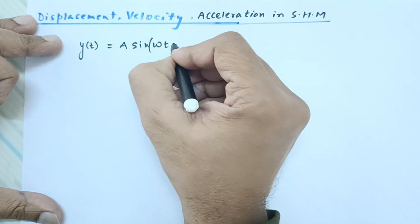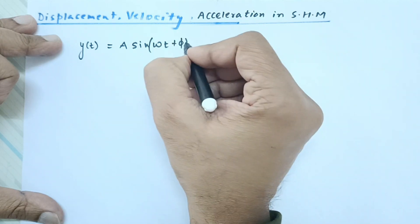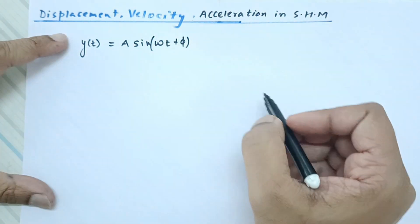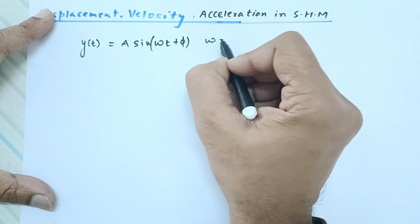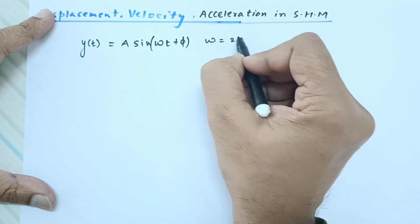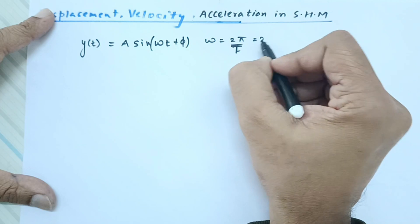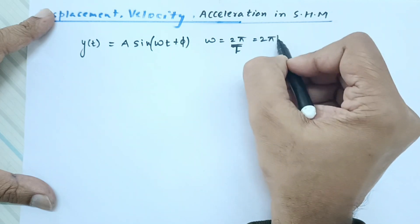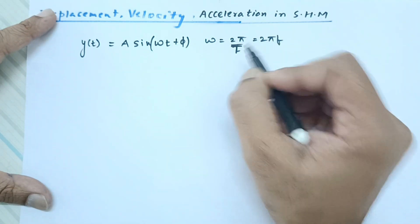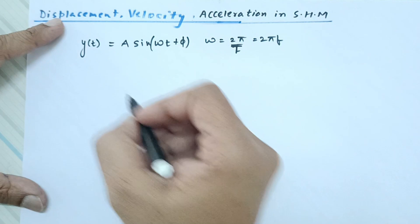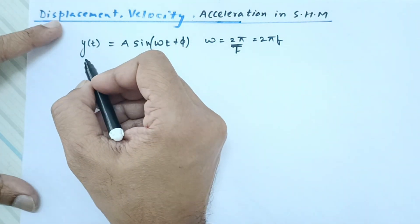We also need to take φ (phi) into consideration — that is the initial phase. Omega (ω) is the angular velocity, given by 2π/T, or sometimes written as 2πf. F is the frequency, which is 1/T. Y is the displacement measured from the mean position.